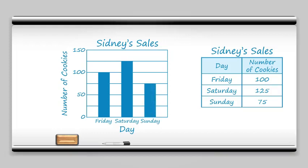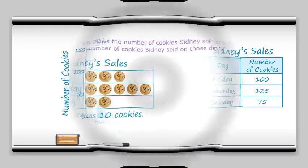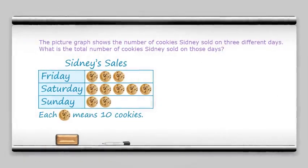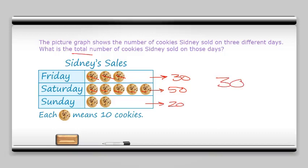Now to be experts at picture graphs and bar graphs, we need to know if we can answer some questions about them. Here we want to know the total number of cookies Sydney sold on these days. Notice that our key says each cookie is 10 cookies. So on Friday I have 10, 20, 30 cookies. On Saturday I have 10, 20, 30, 40, 50 cookies. And on Sunday just two, so that's 20. Now I'm looking for a total, so we will add and see that that is 100.